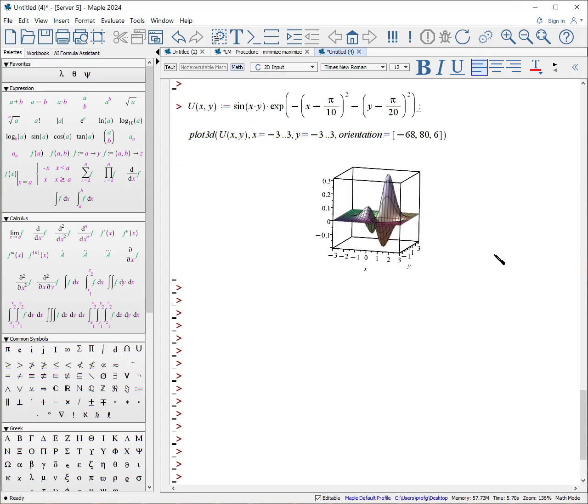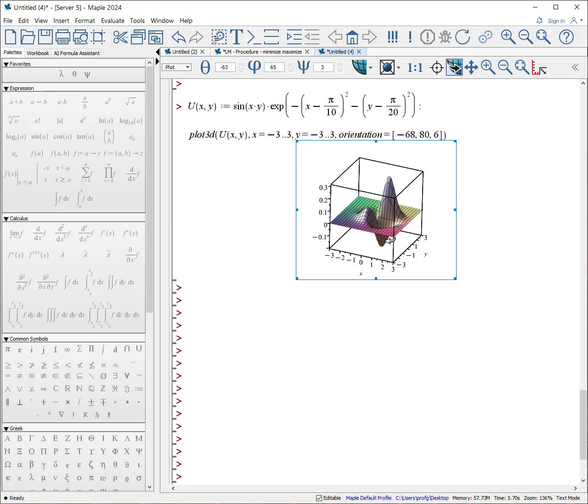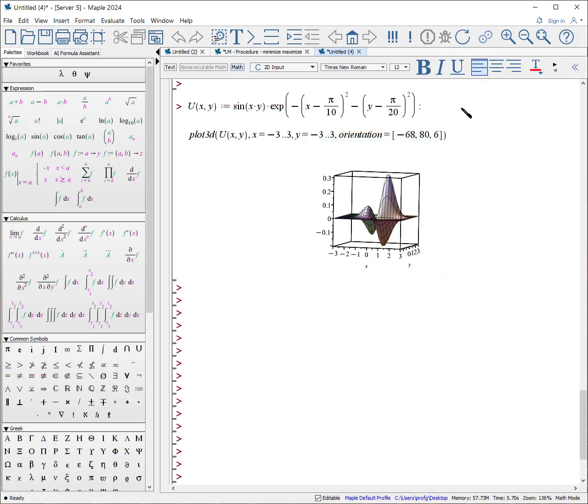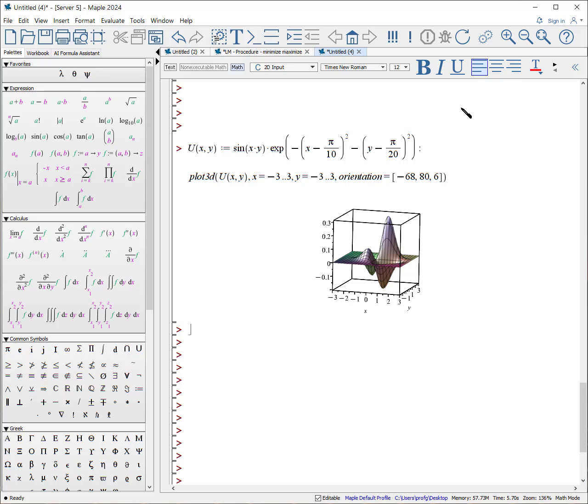What if we have a multiple dimension function? Can we find the minimum and maximum? Notice this function has several local minimums, several local maximums. Let's see what it looks like there. Okay, we're going to hit enter.